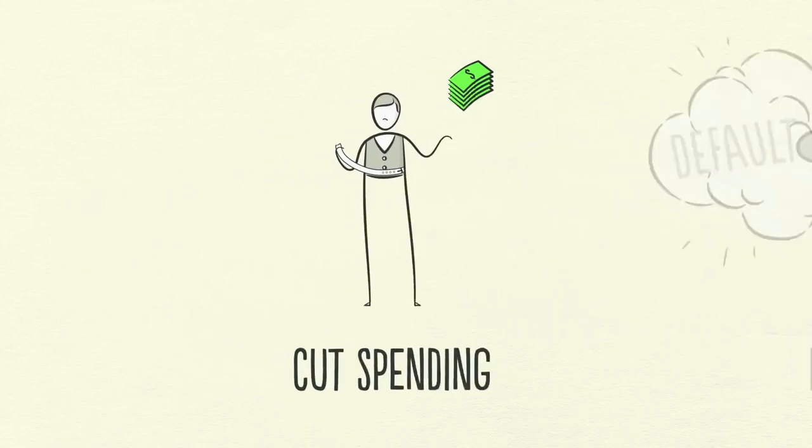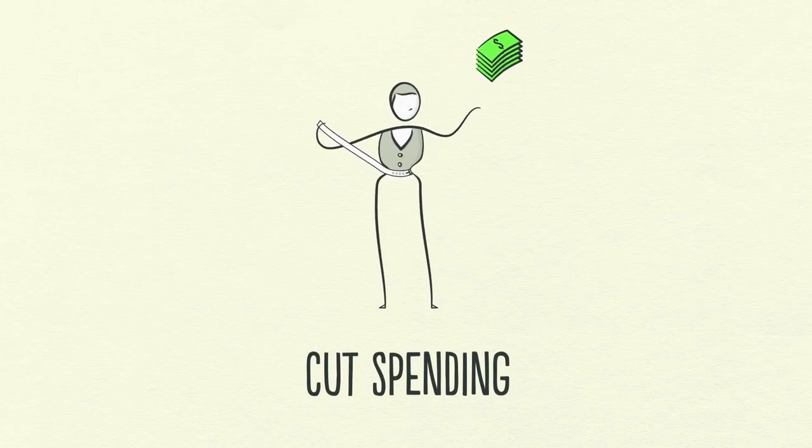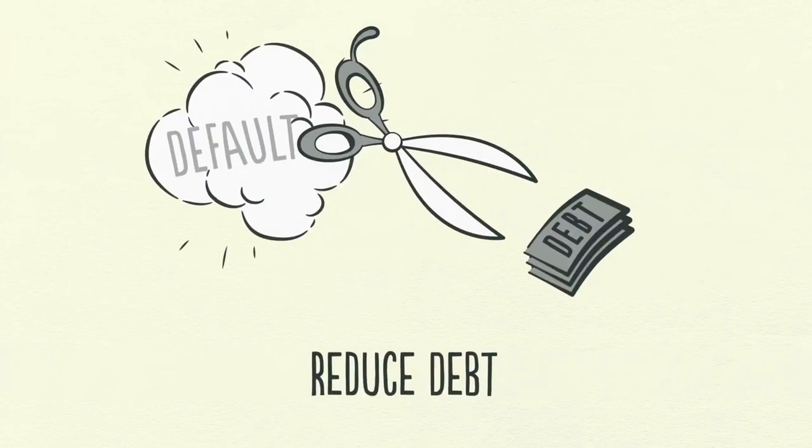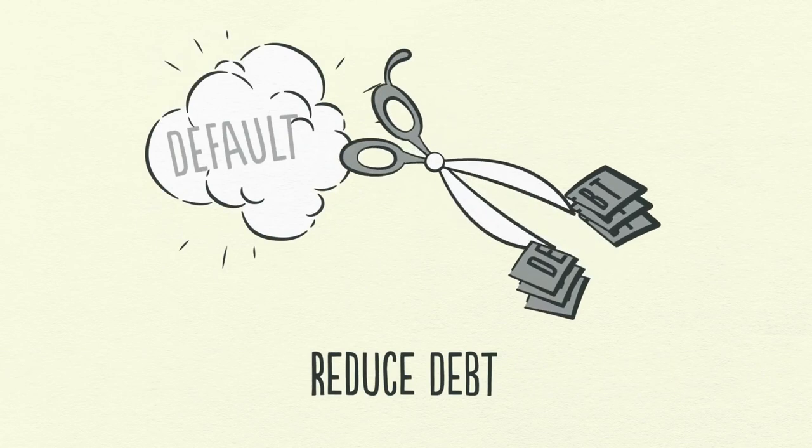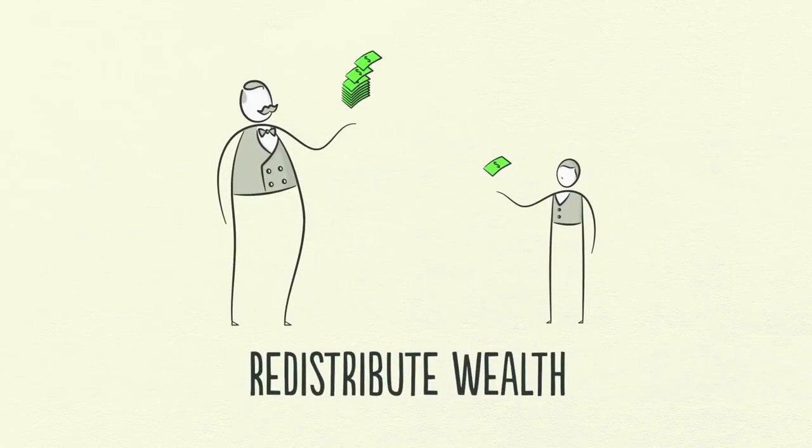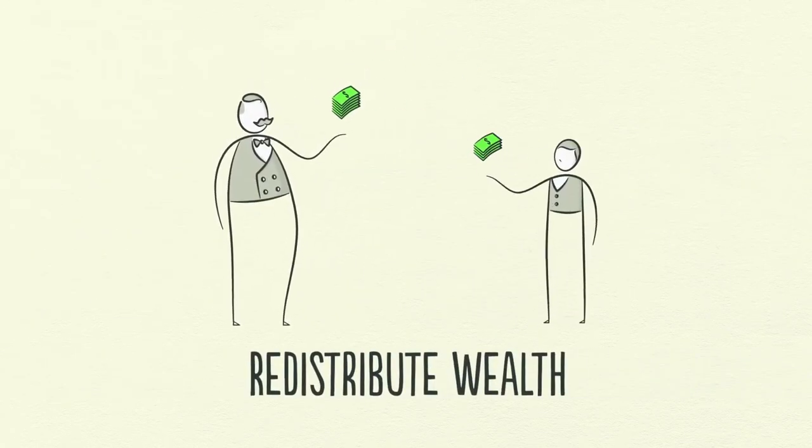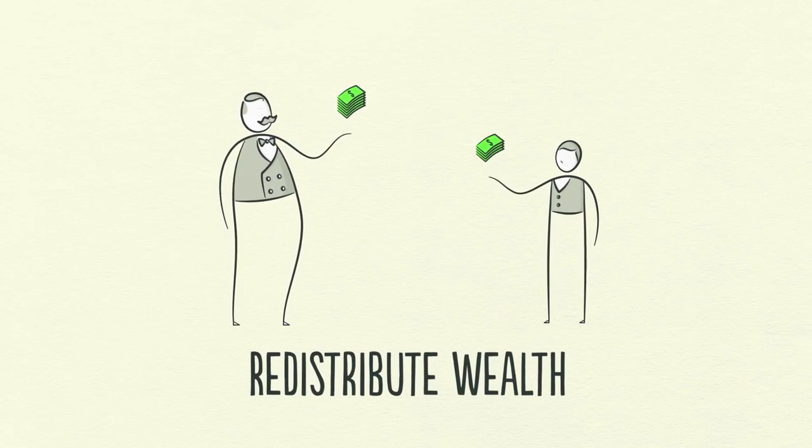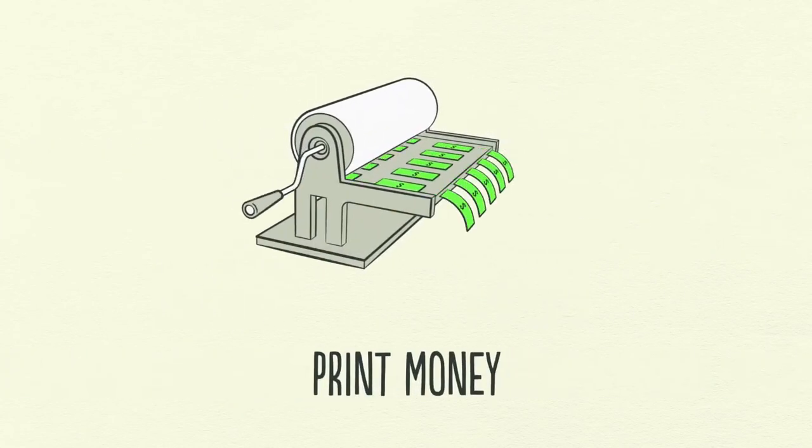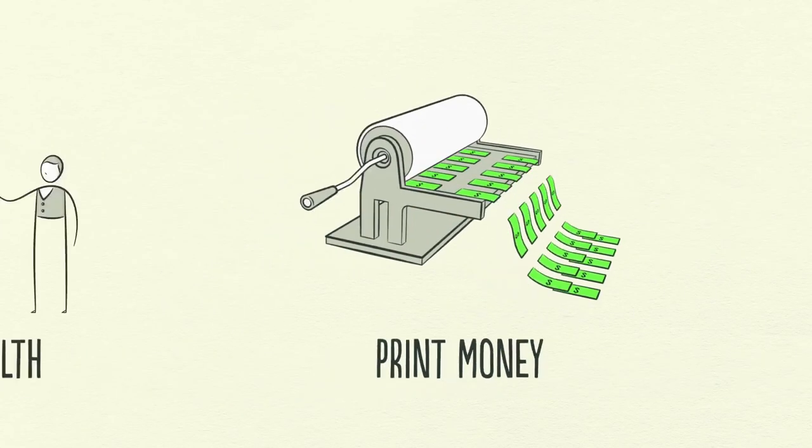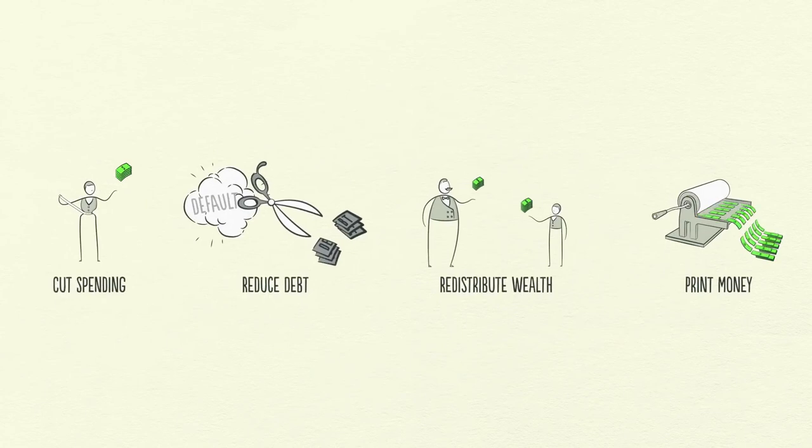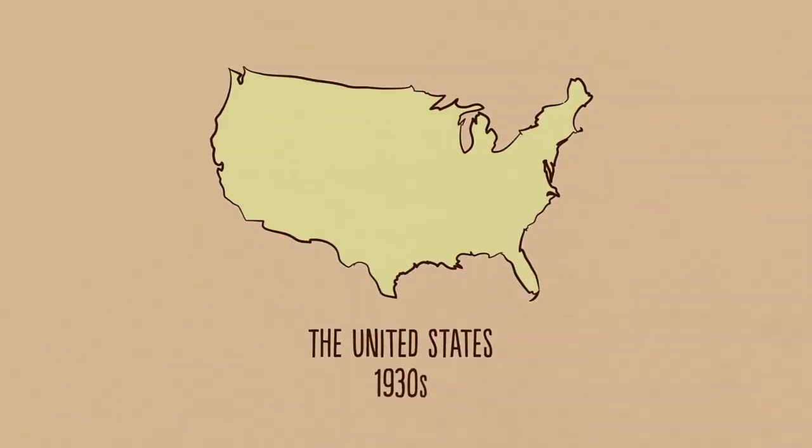One, people, businesses, and governments cut their spending. Two, debts are reduced through defaults and restructurings. Three, wealth is redistributed from the haves to the have-nots. And finally, four, the central bank prints new money. These four ways have happened in every deleveraging in modern history.